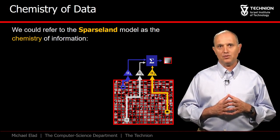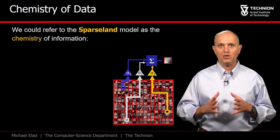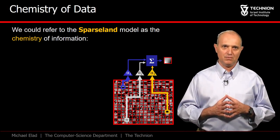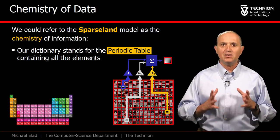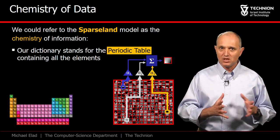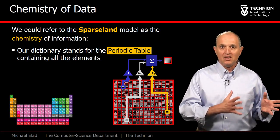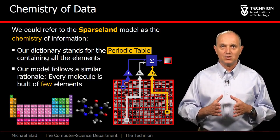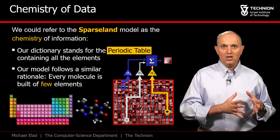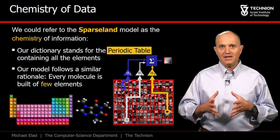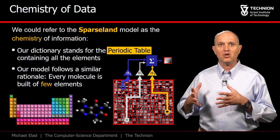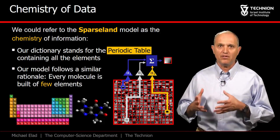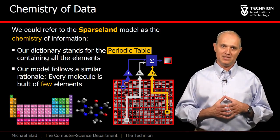One could refer to the Sparsland model as the chemistry of information. In this interpretation, our dictionary contains the fundamental elements, just as held in the periodic table. The signals we model could be thought of as molecules, each being a composition of only a few of the fundamental elements.